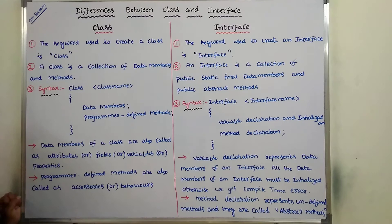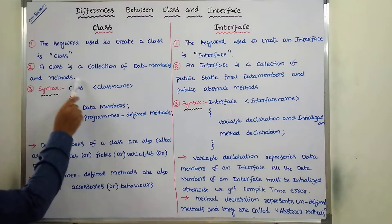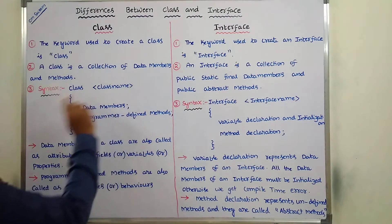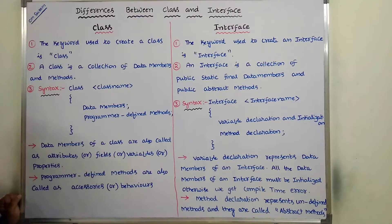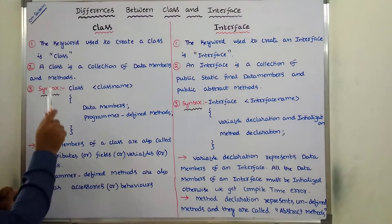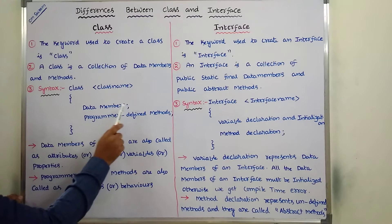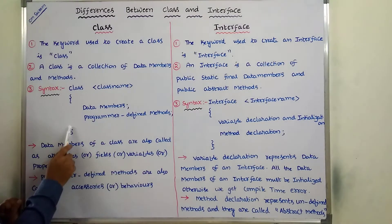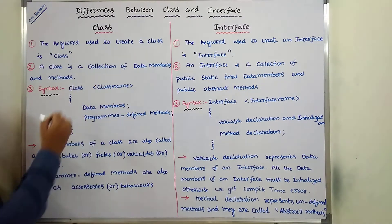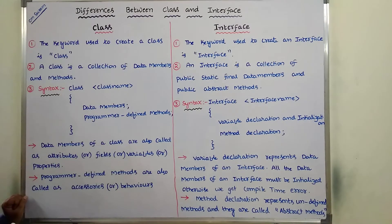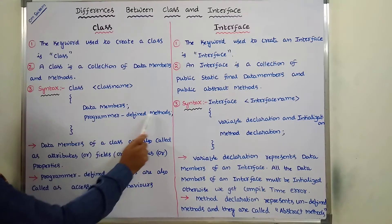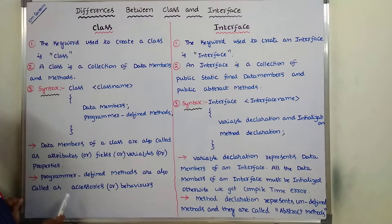Third point — syntax of a class: first, the keyword 'class' is used, followed by the class name, which is a valid variable name. Then an opening brace containing data members and programmer-defined methods, followed by a closing brace. The data members of a class are also called as variables, attributes, fields, or properties. Programmer-defined methods are also called as functions or behaviors.